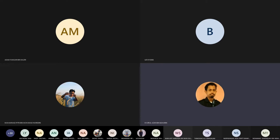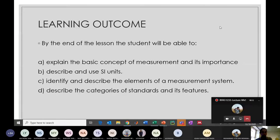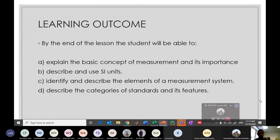Okay, this is the learning outcome for today's topic. By the end of this lesson you should be able to: number one, explain the basic concept of measurement and its importance; number two, describe and use SI units; number three, identify and describe the elements of a measurement system; and number four, describe the categories of standards and its features.